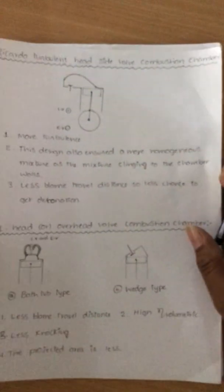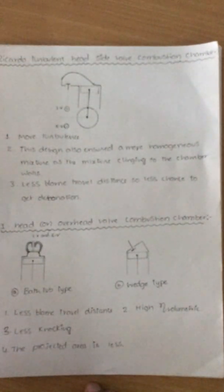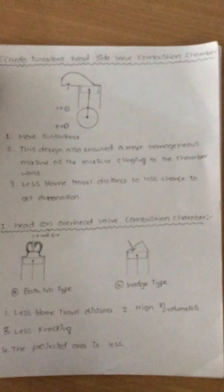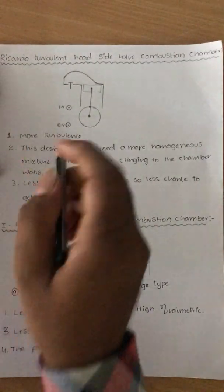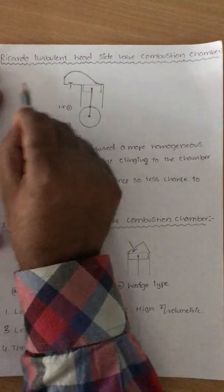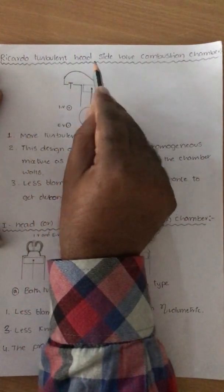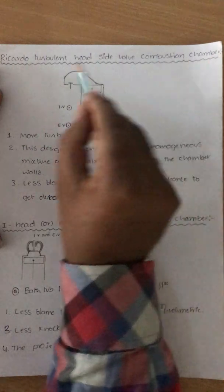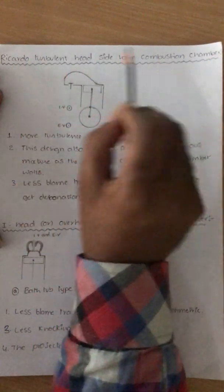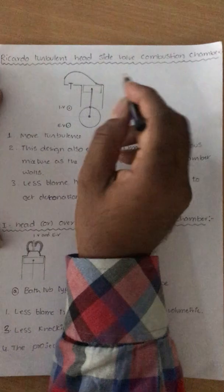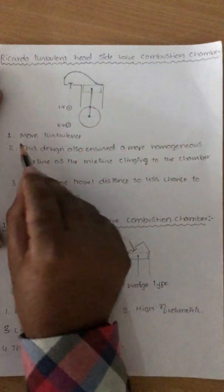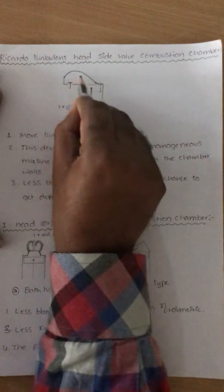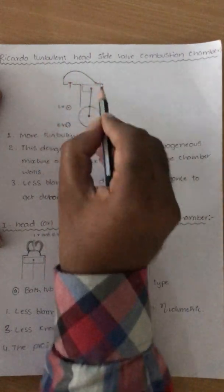The next type is a modification of the side wall combustion chamber called the Ricardo turbulent head, or Ricardo turbulent head side wall combustion chamber. It is essentially an L-head or side wall combustion chamber but with a slight modification to increase turbulence. This design ensures more turbulence due to the shape of the chamber.